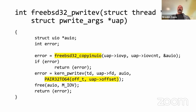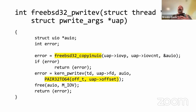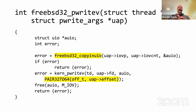For the implementation of freebsd32_pwritev: first we have a freebsd32-specific copyin_uio that creates a copy of the iovec with 64-bit size_t's and 64-bit pointers by copying in the 32-bit ones and translating them. Then we call kern_pwritev much the same as before, except we use the PAIR32TO64 macro to glue the two offset arguments — offset_lo and offset_hi — back together into a single 64-bit number. It's actually quite straightforward and easy to use.